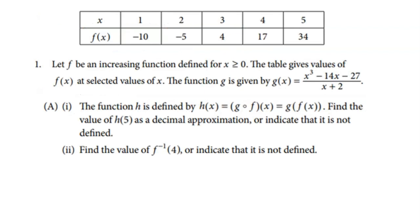Let's talk about Part A. There are three parts overall, and Part A has two sub-parts. They first define a new function H as the composition of G composed of F. So we're going to literally take F and plug it into G to create this new function H. Then they want us to find the value of H of 5 as a decimal approximation. The second part of Part A is to find the inverse of function F at 4.